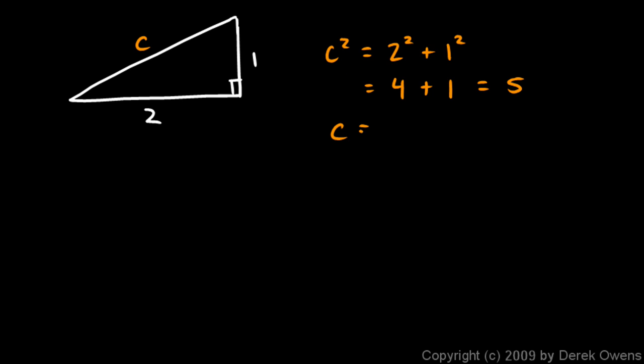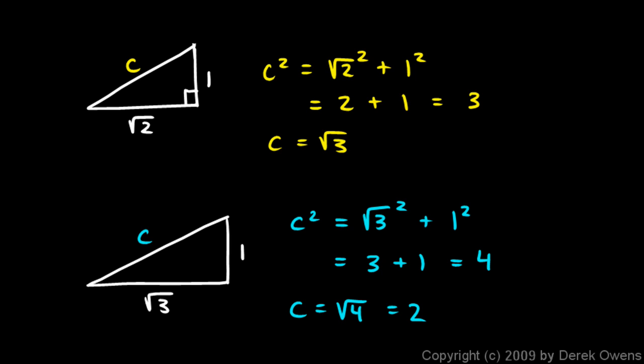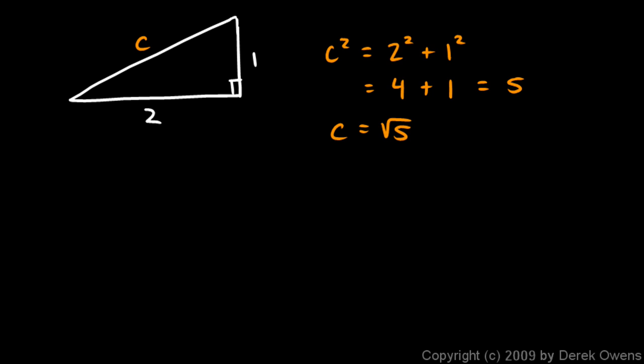So you see we've constructed segments of length square root of 2, square root of 3, square root of 4, or actually square root of 3 was down here, square root of 4, square root of 5. And we could go on and construct lengths of square root of 6, square root of 7, and so on.